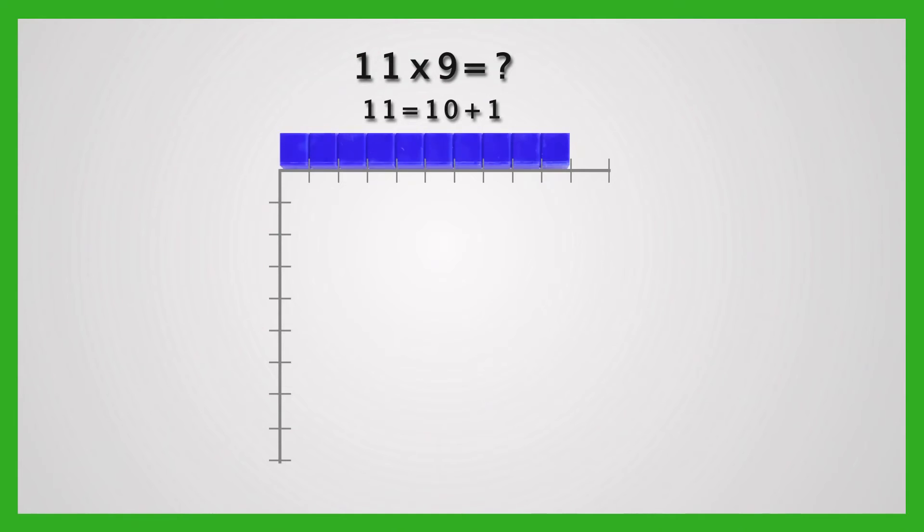Let us use the area method to multiply 11 by 9. Represent the multiplicand 11 and the multiplier 9 as two sides of a rectangle. 11 is 10 plus 1. Represent it with one rod of 10 and one yellow cube. Represent 9 with 9 cubes or units.